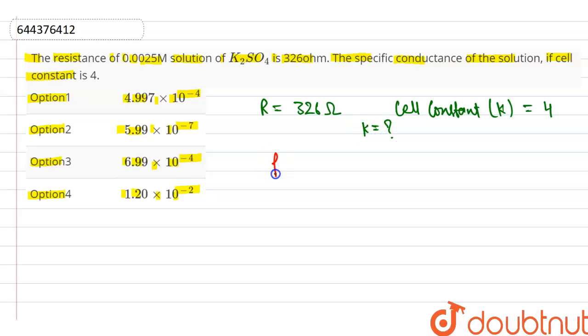We know that the resistivity is equal to resistance into area upon length. This is our resistivity or we can say specific resistance.